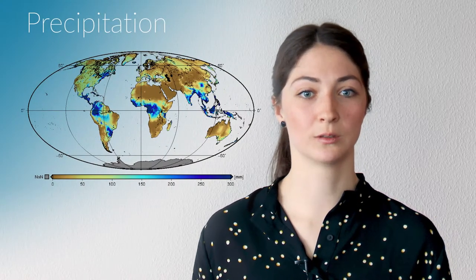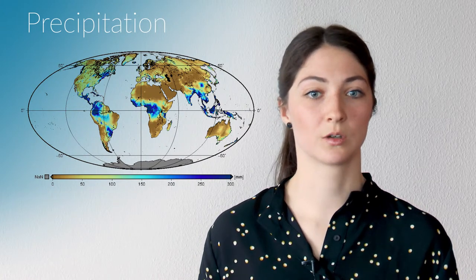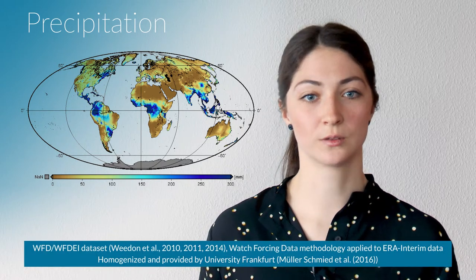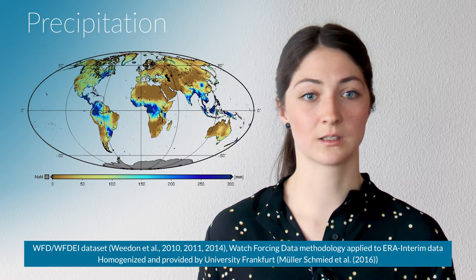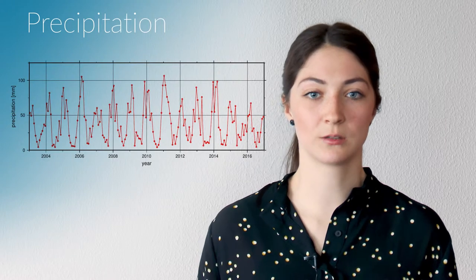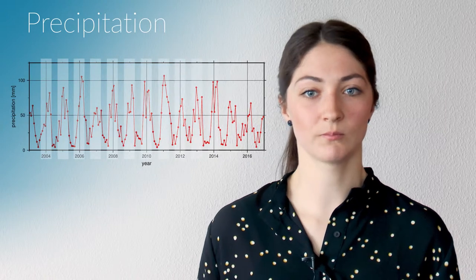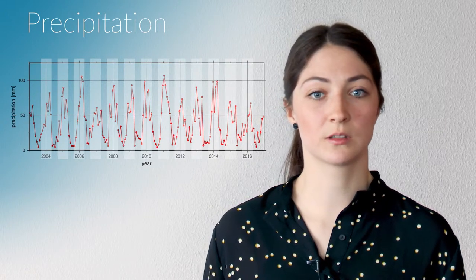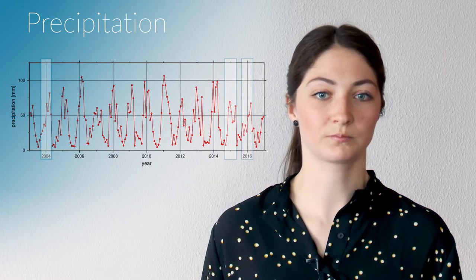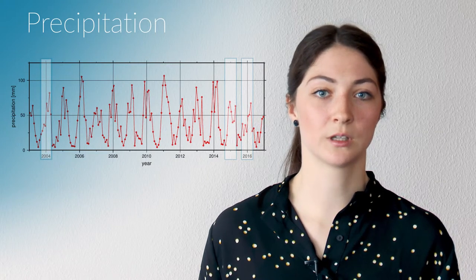To give some examples of meteorological indicators, I first want to introduce the datasets we use. The first dataset is precipitation, shown here in the figure at the global level — on the equator, for example, there is more precipitation than in the northern part of Africa. This dataset is provided by our project partners at the University of Frankfurt and is called the WFD-WFDEI dataset. We also see a time series of precipitation: each year shows a high peak, but some peaks are lower than others, for example in 2004 or 2015 and 2016, suggesting some drier years.